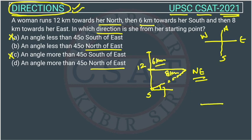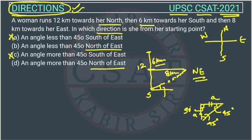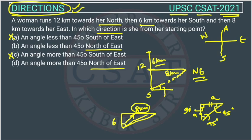They are asking us to apply the concept of mensuration. If this distance is A and this distance is also A, then both angles are 45 degrees, because this is a right angle. In this diagram, this side is 8 km and this side is 6 km. The angle in front of the greater side is greater. So the angle in front of the 8 km side will be greater, and the angle opposite the 6 km smaller side will be smaller.